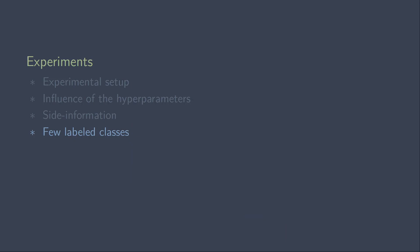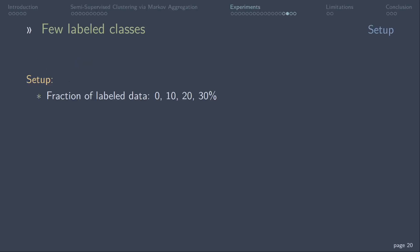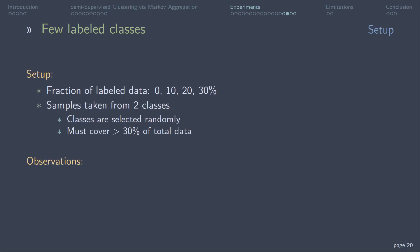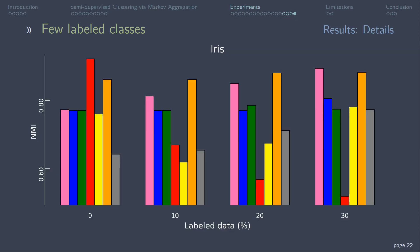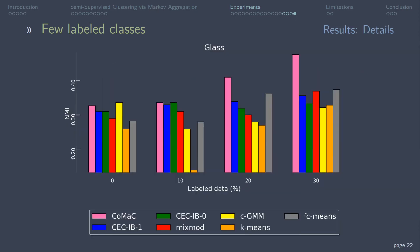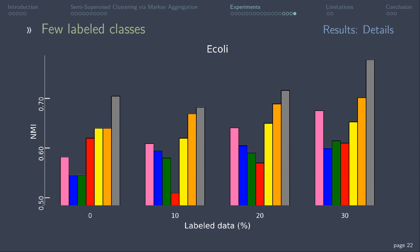Lastly, we repeat this experiment. Now, the side information only covers two classes. The two classes are selected randomly and must cover at least 30% of the total data. Again, we look at the influence of labeled data on accuracy. The results show that COMAC is very robust against missing labels from other classes. Here are the details for the same datasets as in the experiment before. Across the board, COMAC performs really well and is able to use the partial side information to increase accuracy.